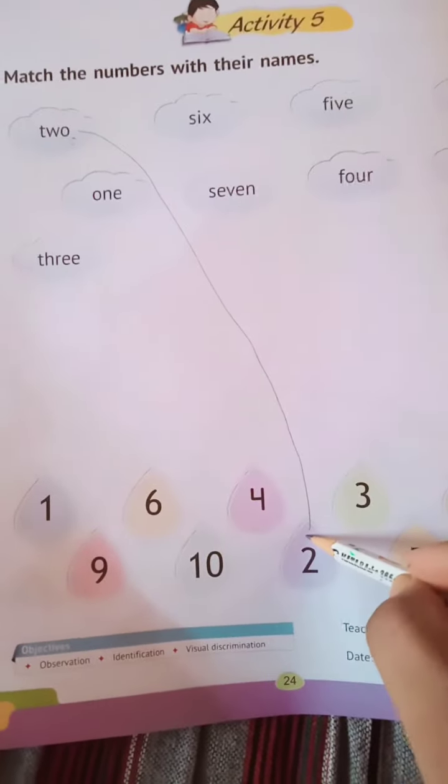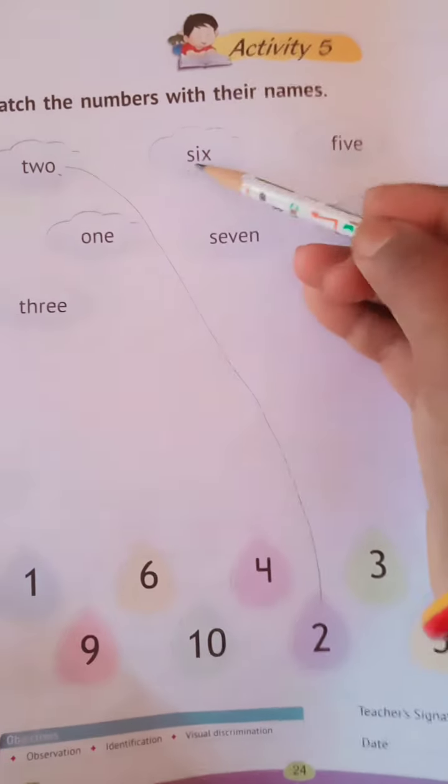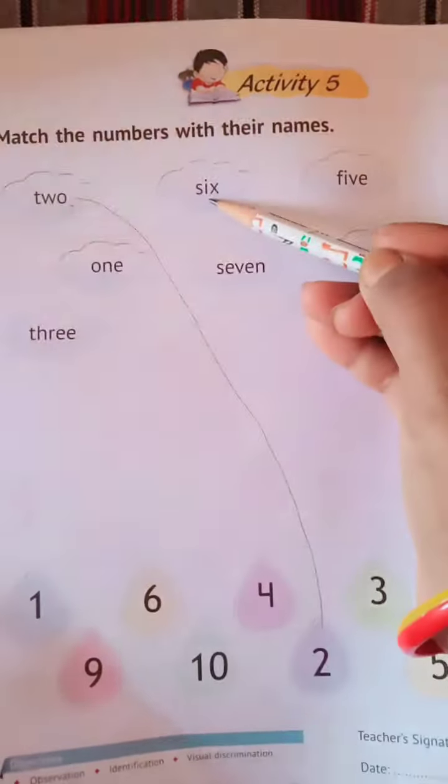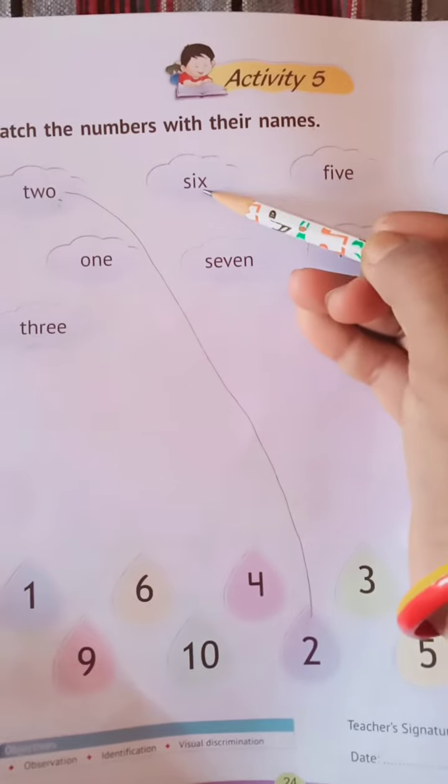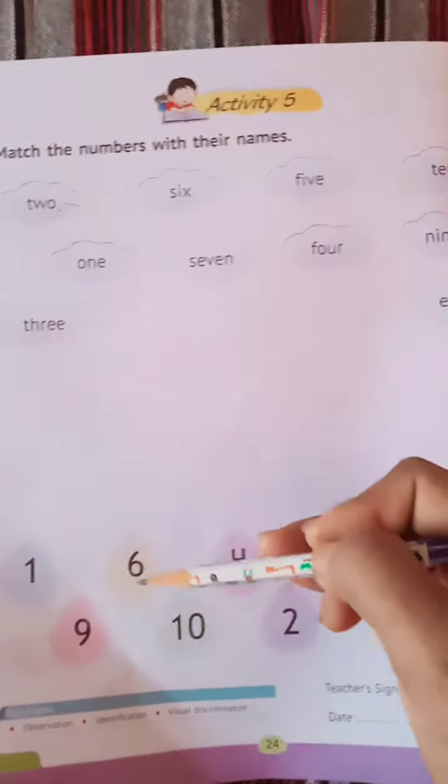So come to the next number. There is written SIX. What is written there? SIX. So we have to match the numbers.